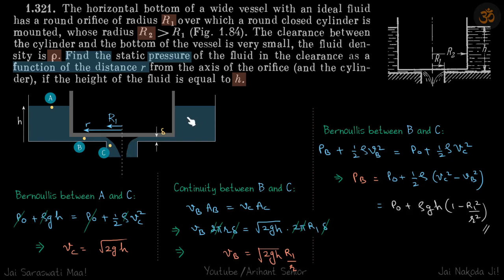This is the same diagram. The inside radius is r1, and at this distance r we need to find the pressure. So let's define some points. Let the top of this container be point A. At a distance r, let's take a point B, and at the opening let it be point C.